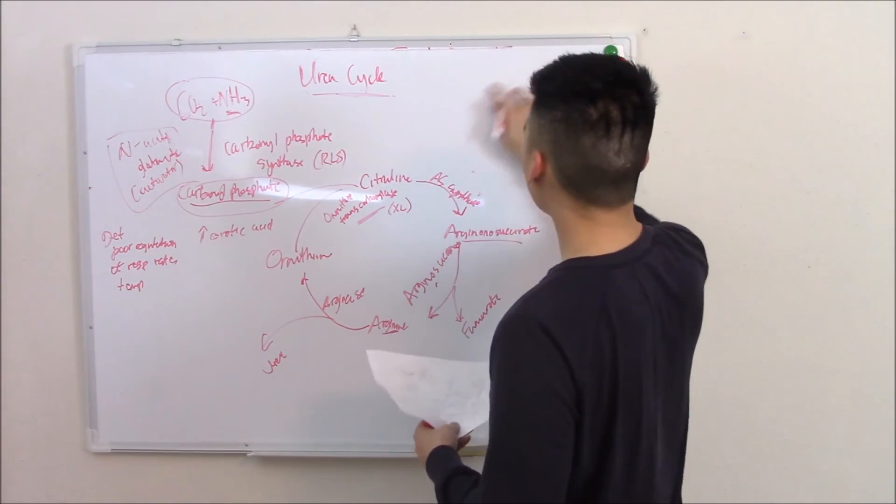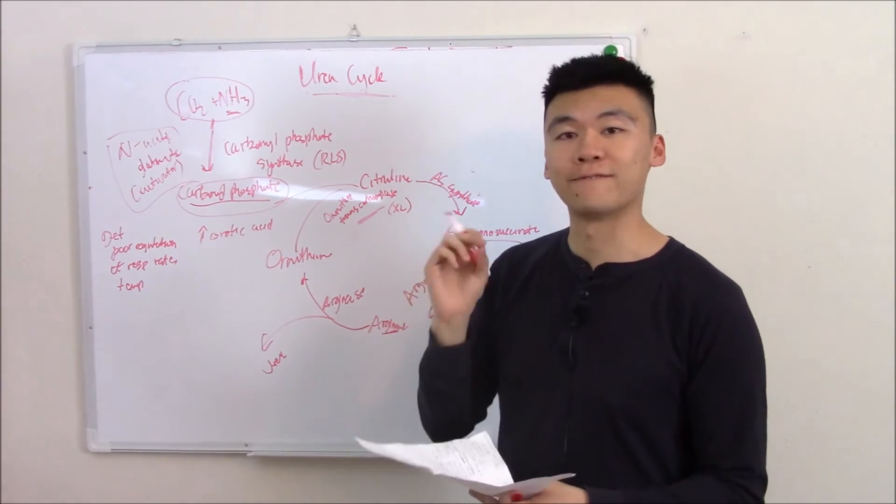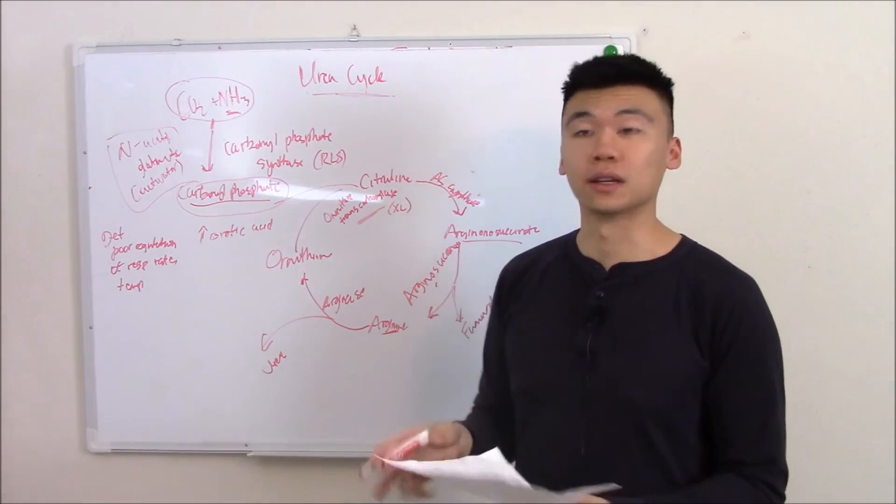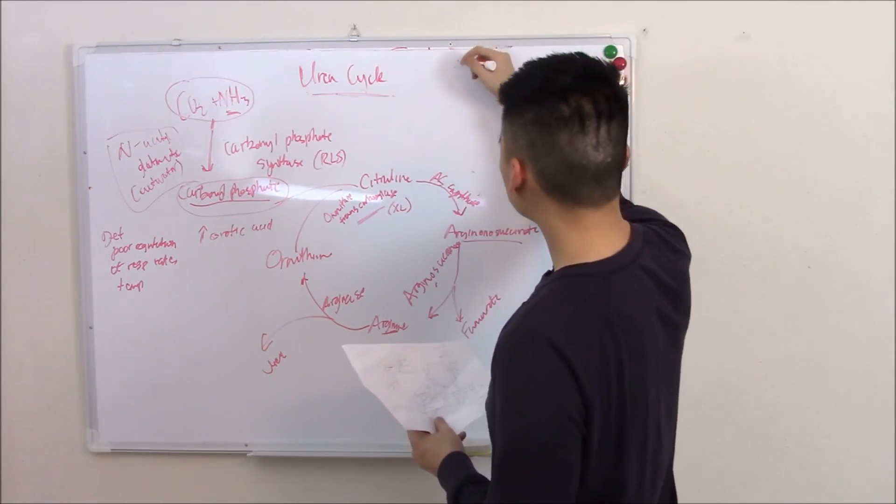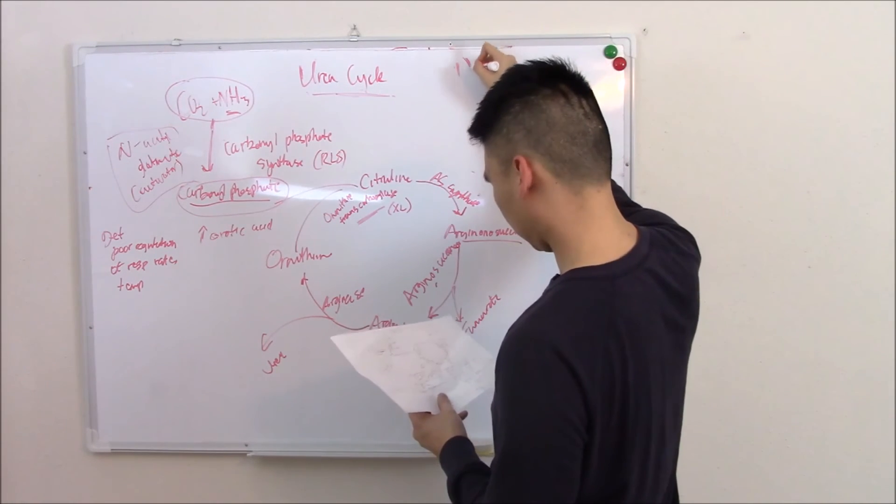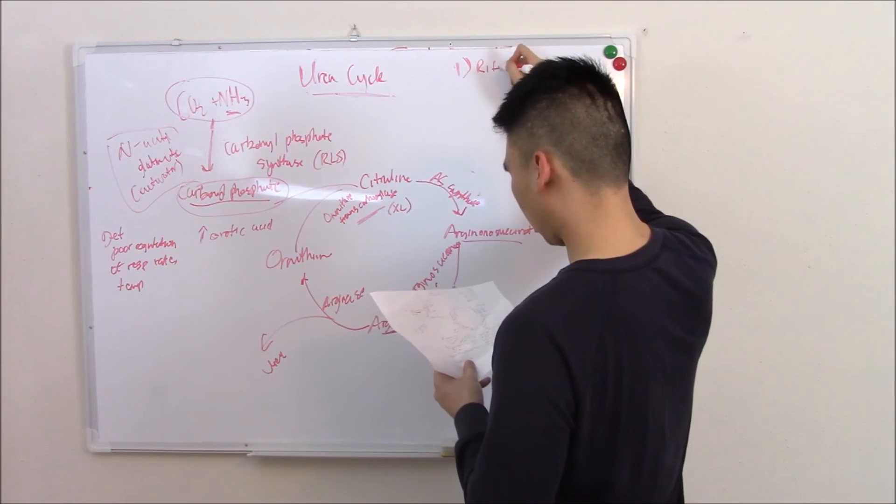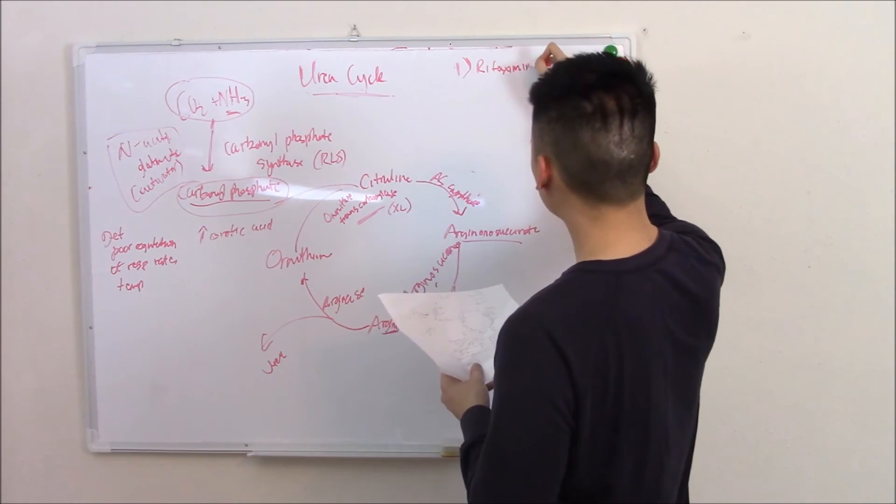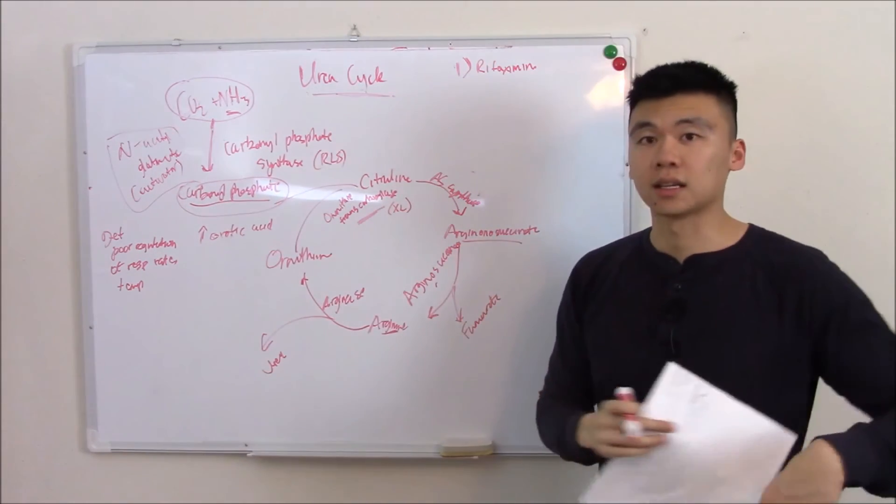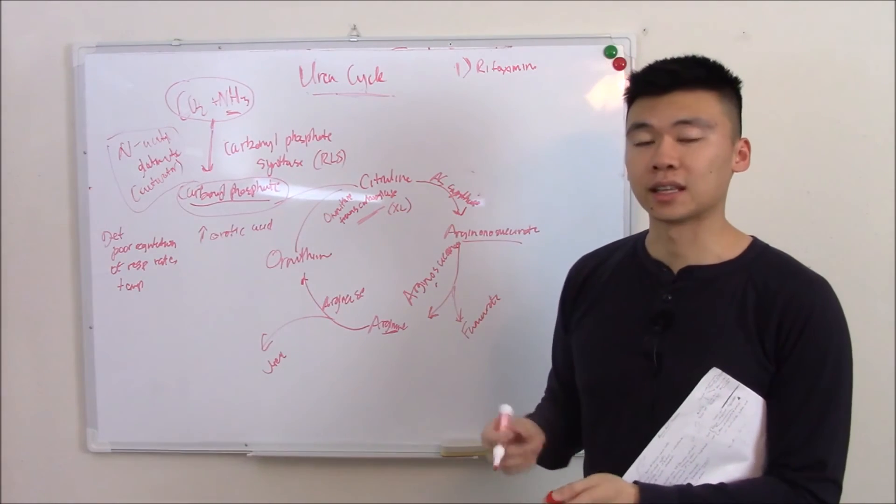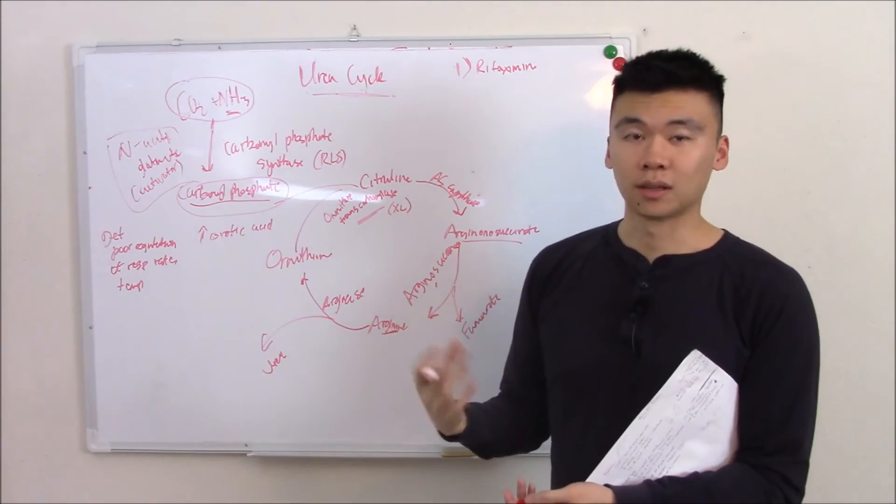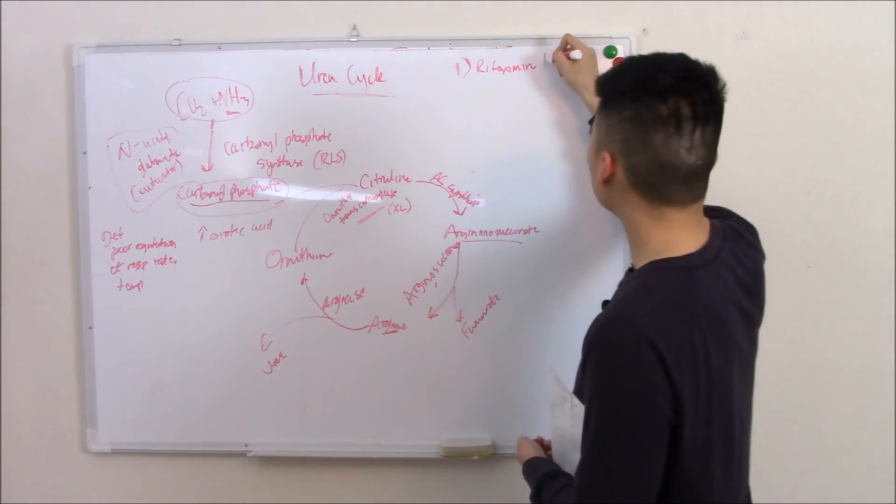Is there a way we can solve that? Is there a way we can fix that? Yes, we can do a lot of things. For instance, we can give rifaximin, which is an antibiotic. It kills some of the gut bacteria that might be making extra ammonia, so that reduces ammonia.